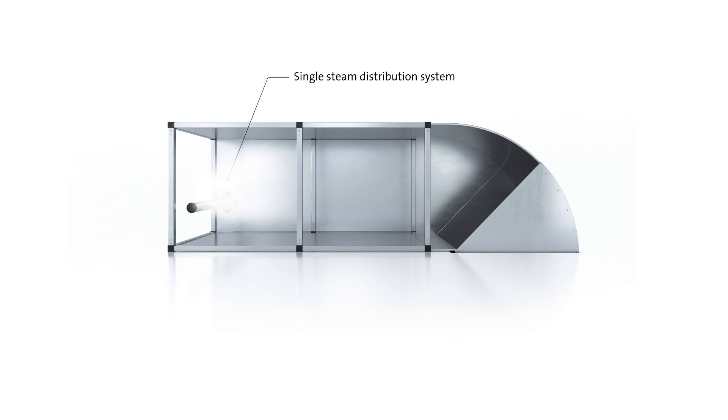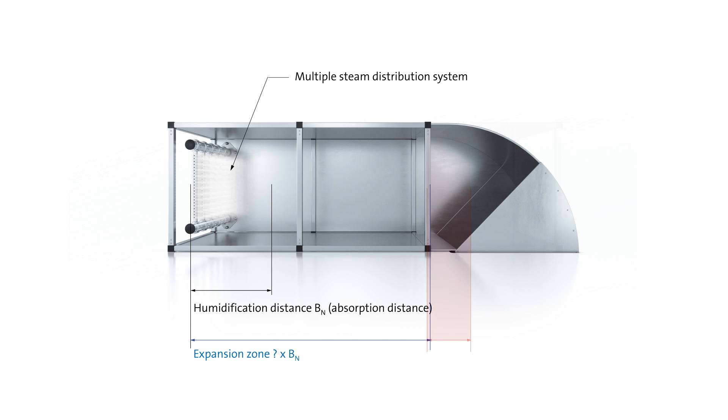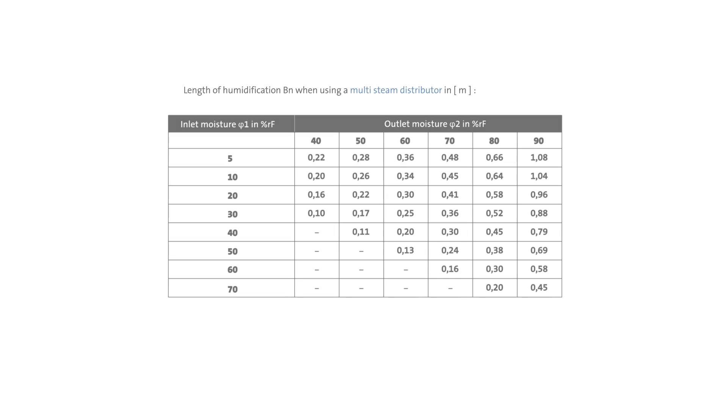If the available humidification distance is insufficient, the necessary distance can probably be shortened by a more homogeneous steam distribution, effectuated by a multiple steam distribution system. If the relative humidity of the inlet air amounts to 10% and the relative humidity of the outlet air is 50%, the necessary humidification distance is now reduced to 26 cm.